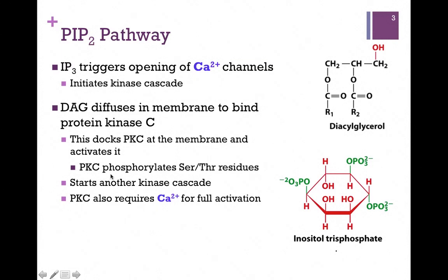Recall, a kinase is an enzyme that adds a phosphoryl group. Now our protein kinase C is docked at the membrane and activated, and it will phosphorylate different proteins and enzymes. This particular kinase works by adding a phosphoryl group to serine and threonine residues — remember that those side chains have hydroxyl groups — and that's going to start a separate kinase cascade. So we've sent two messengers on separate missions and started separate kinase cascades. It's interesting to note that protein kinase C also requires calcium for its full activation, so they're kind of working as a team here, with IP3 opening up those calcium channels to start one cascade and provide the calcium that protein kinase C needs.